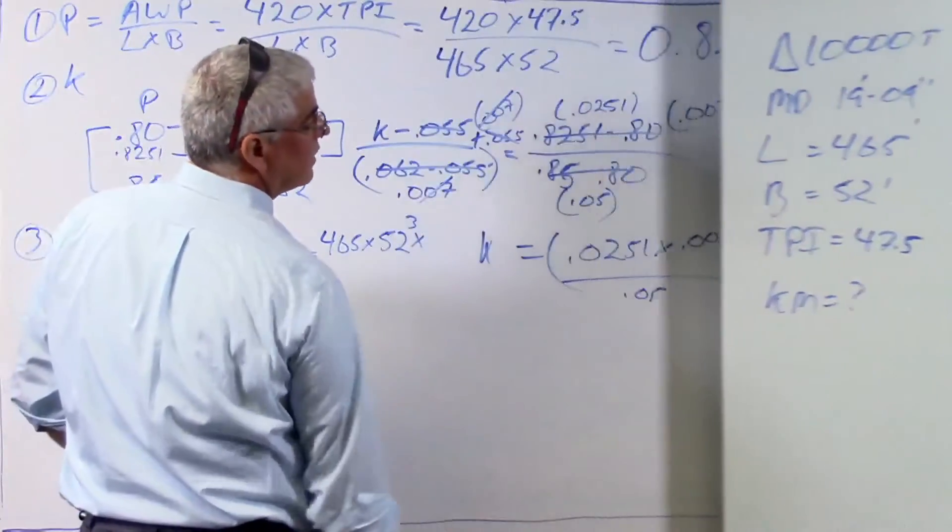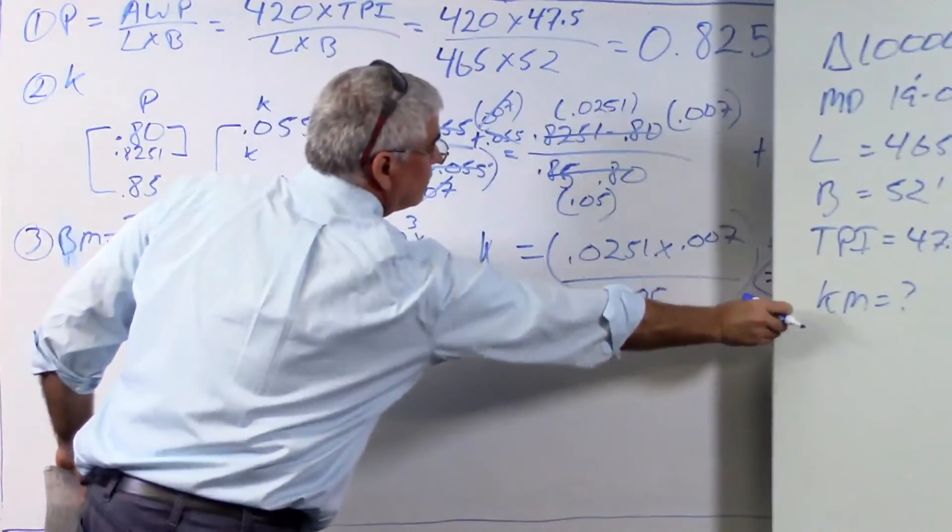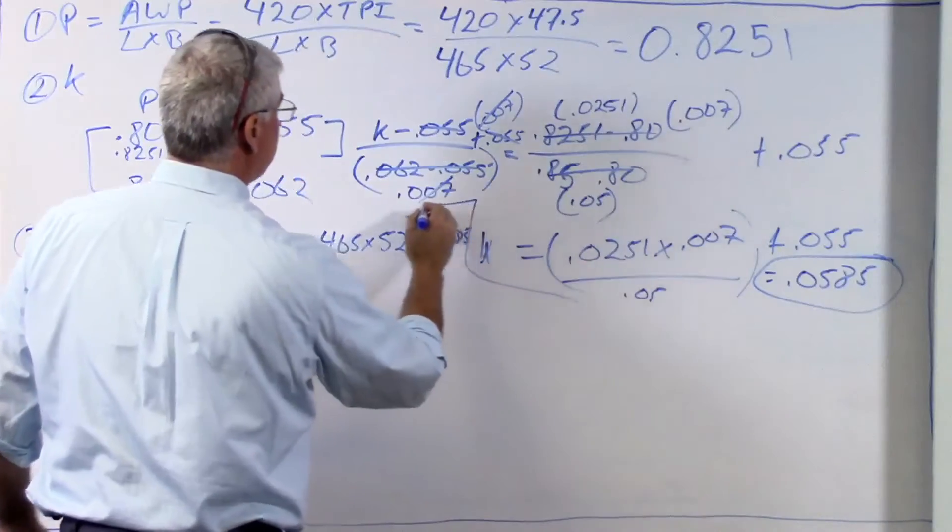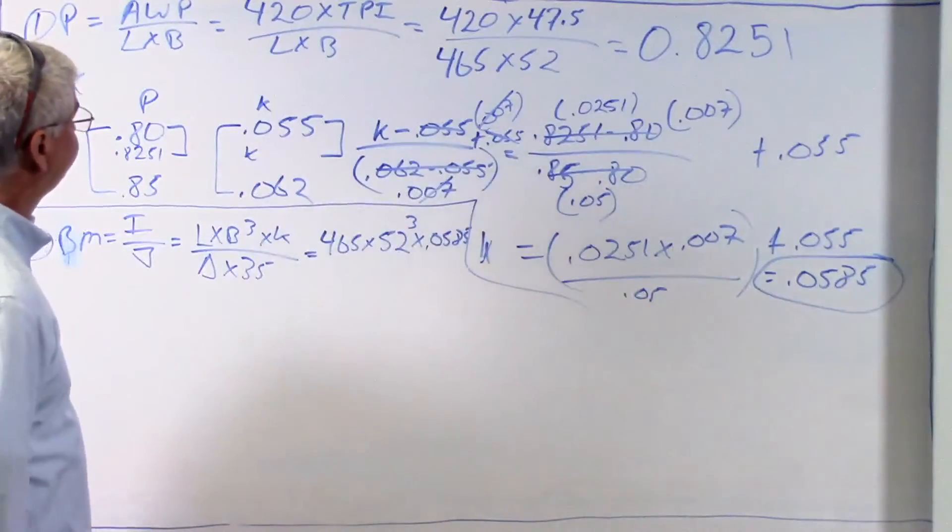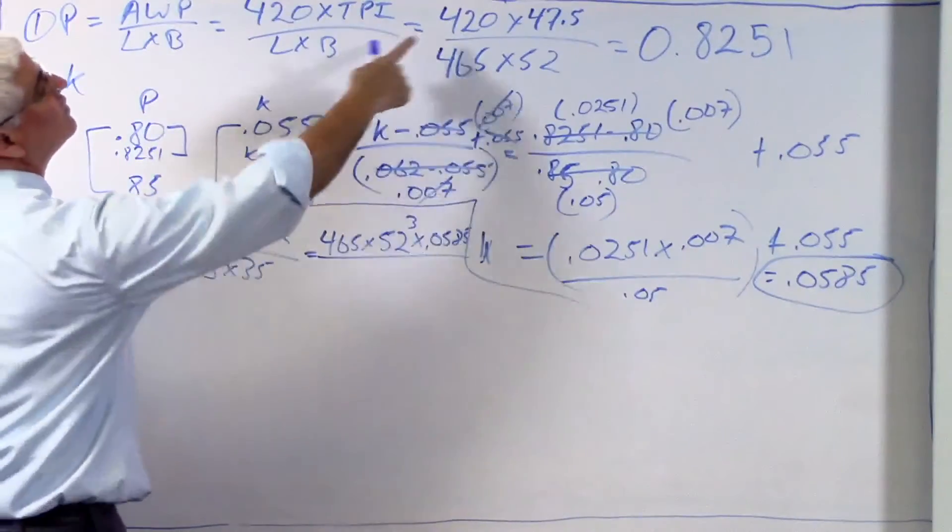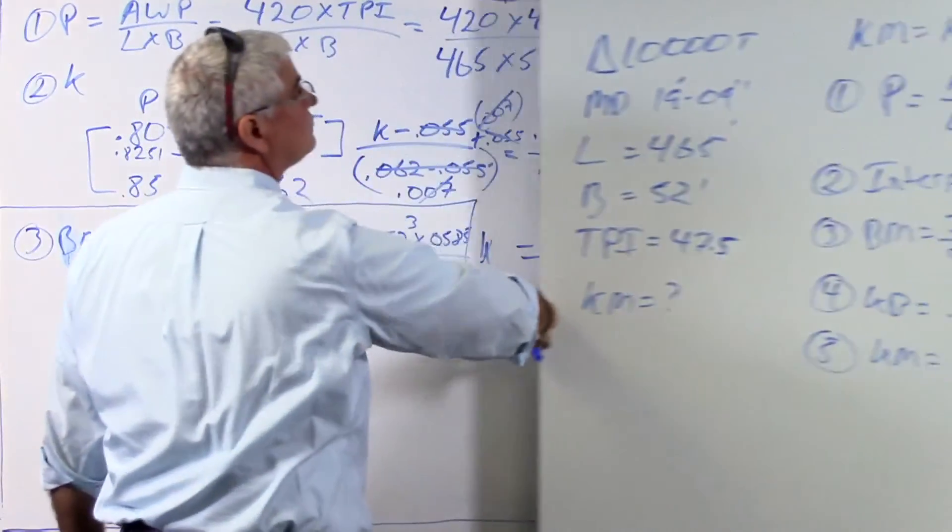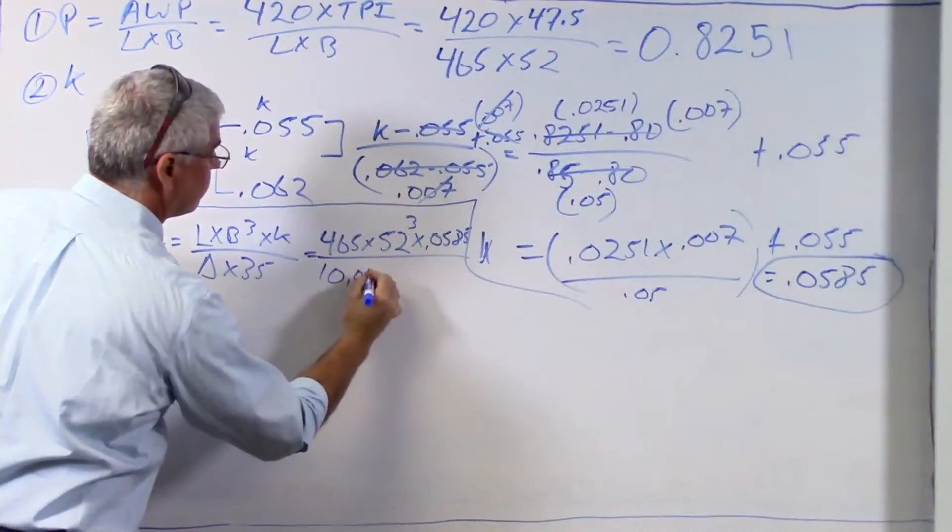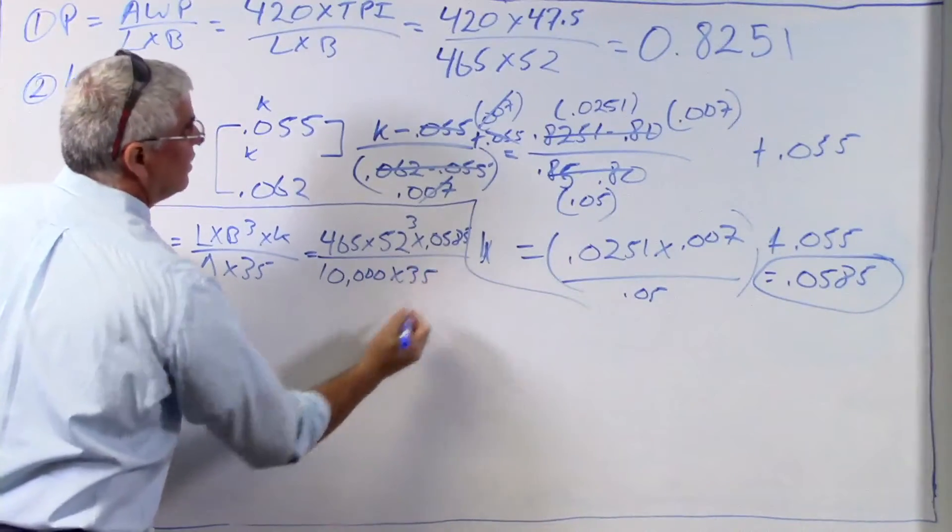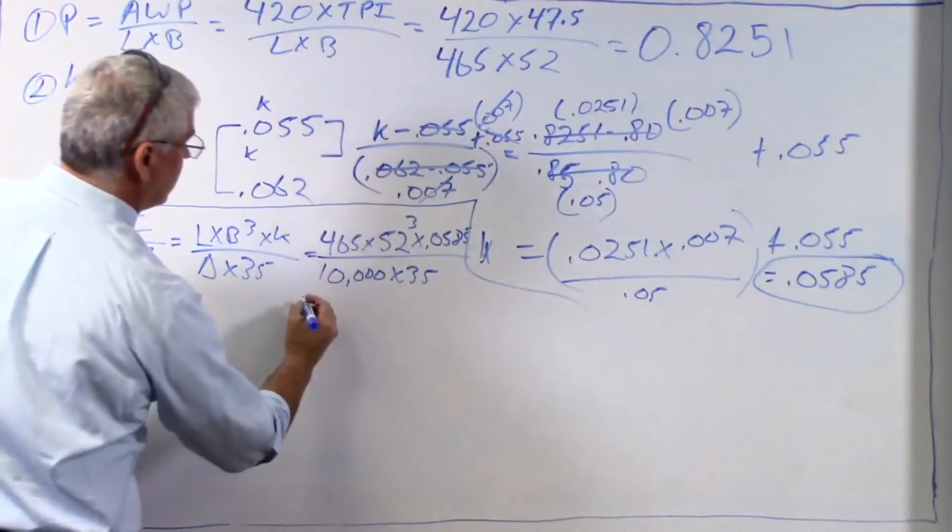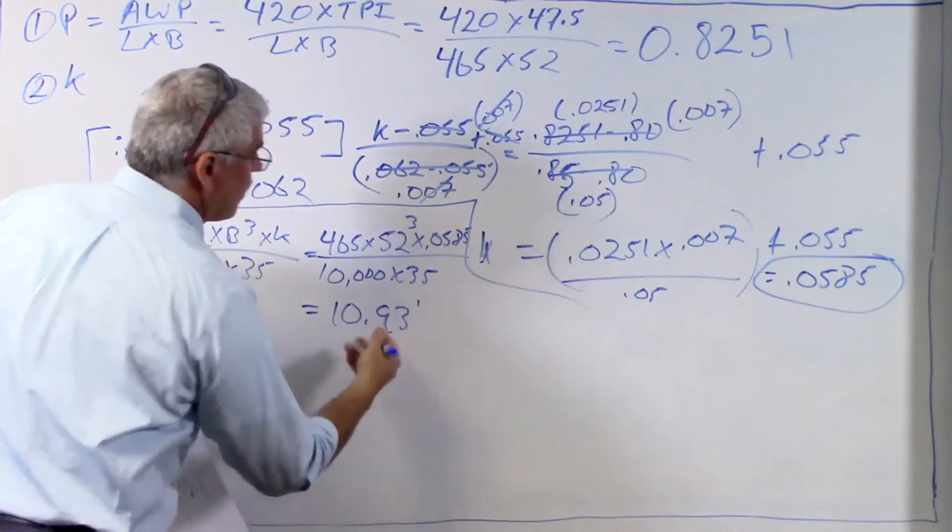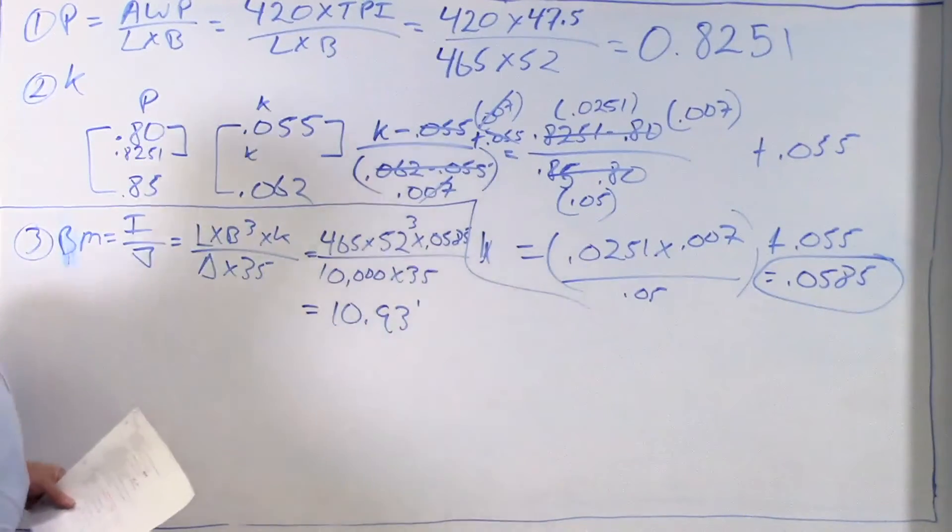So now I've got to divide that by my displacement. My displacement given in the problem, 10,000 tons. And I'm going to multiply that by 35, OK, to get rid of my units. And it turns out that after I do all that, my bm is going to equal 10.93 feet. I'm going to go out two decimal places for now. And then I'll round up to one in the final solution. So we did that.